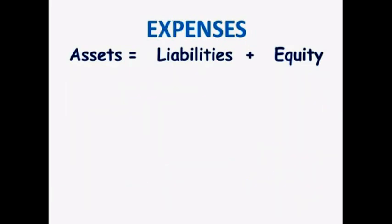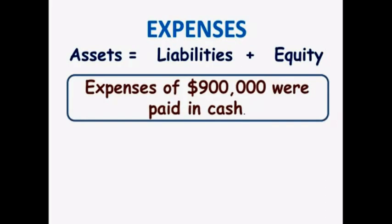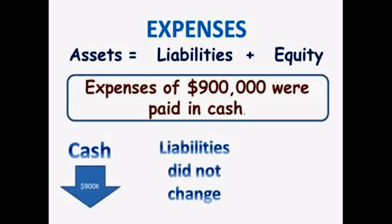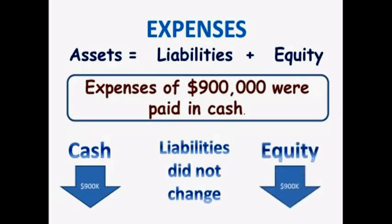Now let's look at expenses. Let's say the store had $900,000 during the year in expenses and paid these expenses in cash. Cash will decrease by $900,000. Liabilities were not affected. Equity decreased because expenses decrease equity. And our accounting equation balances.